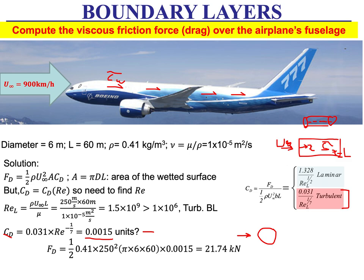The wall shear stress scales with one over the boundary layer thickness, so it is very large at the leading edge and decreases toward the trailing edge. The integral of that gives an average wall shear stress described by the total drag force. The average wall shear stress is simply half rho u-infinity squared times C_D.